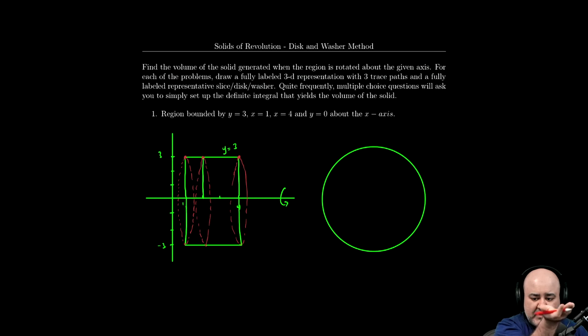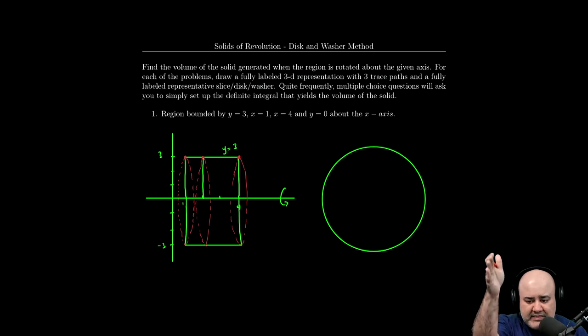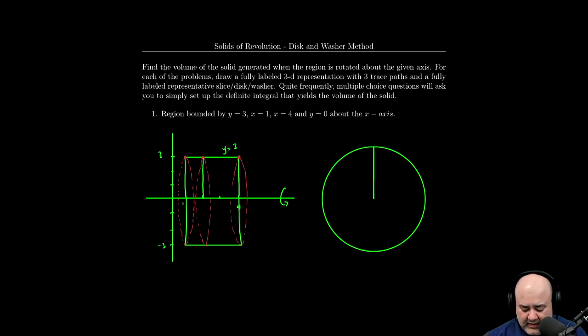Now think about it this way. Had we sliced it horizontally, then the radius would have been a horizontal distance. But in this case, since we're slicing it vertically, the radius has to be measured and defined and notated as the vertical distance y.